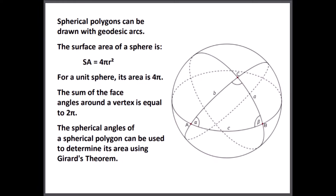There are three basic geometric premises that underpin the following analysis of the five platonic solids. The surface area of a unit sphere is 4π, based on its area formula of 4πr². The sum of the face angles around the vertex of a spherical polygon is equal to 2π. And the sum of the spherical angles of a spherical polygon can be used to calculate its area using Girard's theorem, which I will describe here.